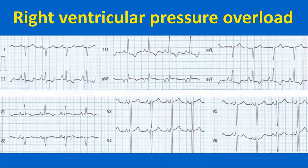Right ventricular hypertrophy is characterized by tall R in V1, deep S in V6, and right axis deviation. There is associated P pulmonale in lead 2, indicating right atrial enlargement secondary to right ventricular hypertrophy. A sharp positive P wave in V1 also reflects right atrial enlargement.